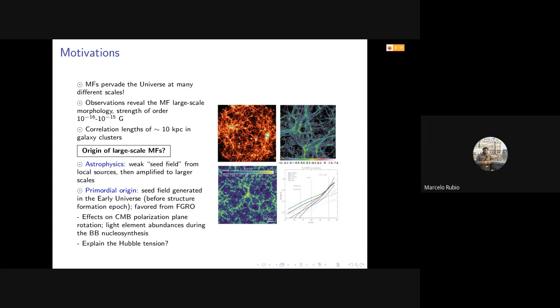So this hypothesis is quite favored from observations of quasar spectra by, for example, the Fermi Gamma Ray Observatory, which reports exactly the order of magnitude I mentioned before: 10 to the minus 16 gauss.